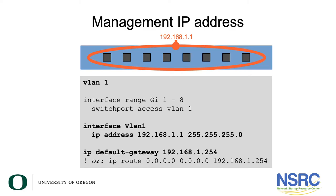If we need management access to the switch, given that VLAN 1 is the default VLAN, we can define VLAN 1 as having a virtual interface and an IP address. The example shows IP address 192.168.1.1 as the IP address of VLAN 1, so we can access this switch for management purposes on that address. We'll also need to assign the switch a default gateway so it can reach devices outside the LAN. The syntax depends on the model, device, and vendor — this example is from a Cisco Layer 2 Ethernet switch.